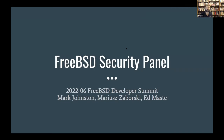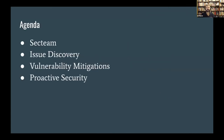This will be a somewhat interactive discussion, though we have slides covering specific points. There are four main topics: a bit about sec team and changes to it over time, how issues are found, reported, and dealt with, vulnerability mitigations added to FreeBSD, and proactive approaches to improving security.